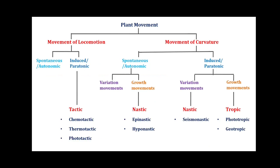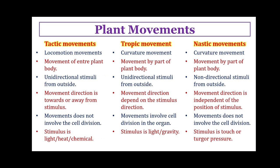In case of movement of curvature, it is again subcategorized into two types — spontaneous or induced, i.e., autonomic or paratonic — and each of these is further subcategorized into movements of variation or movements of growth. In case of spontaneous movement, the growth movements show nastic type of moments: epinastic or hyponastic. In case of induced movement of curvature, the variation movement includes nastic movements such as seismonastic, and growth movement includes tropic movements — phototropic or geotropic.